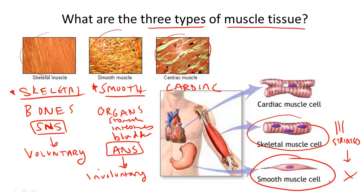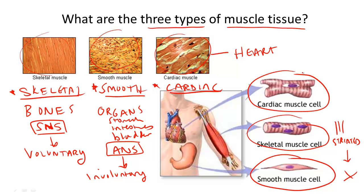Finally, the type of muscle only found in the heart is called cardiac muscle tissue. Cardiac muscle tissue is webbed to allow the heart to beat rhythmically. Cardiac muscle looks like it has both light and dark stripes, and it is like skeletal tissue, very striated, or striped.